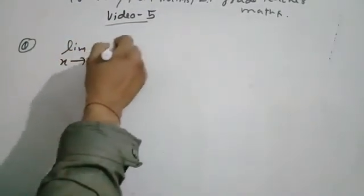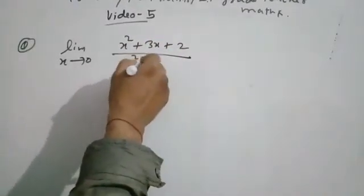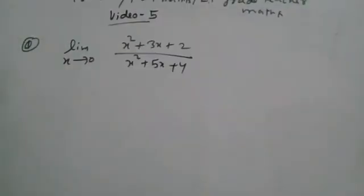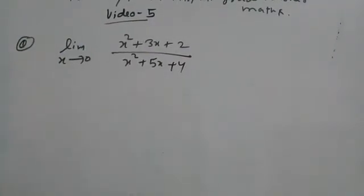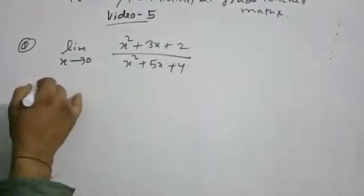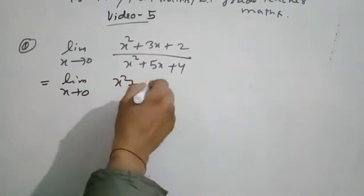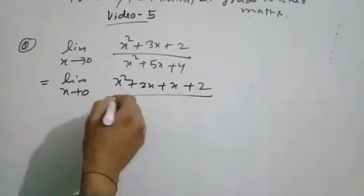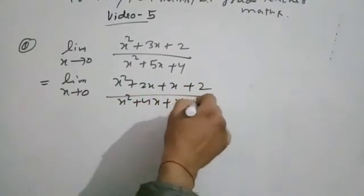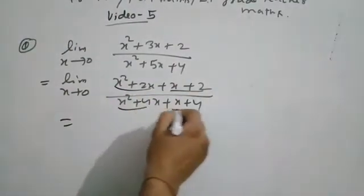Question: limit x tends to 0 of (x² + 3x + 2) / (x² + 5x + 4). We factorize the numerator as (x+1)(x+2) and the denominator as (x+1)(x+4) by splitting the middle terms.